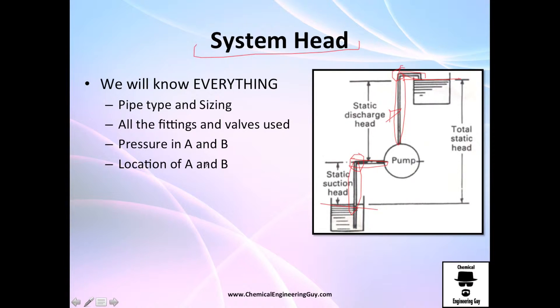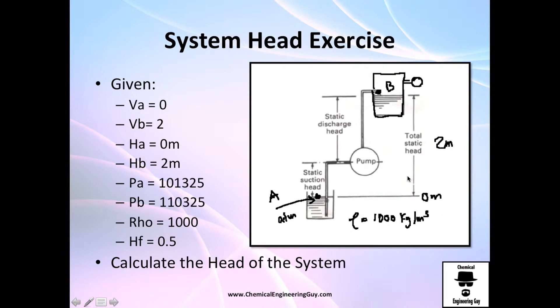We know the type of elbow here, elbow here, maybe there's a valve. We know everything. We have pressure in A and B, and we have the height of A and the height of B and the height of the pump. So essentially we have everything to solve for the pumping system.